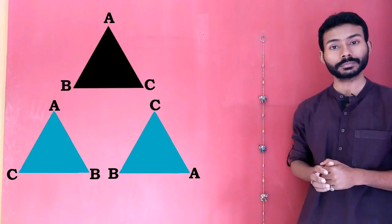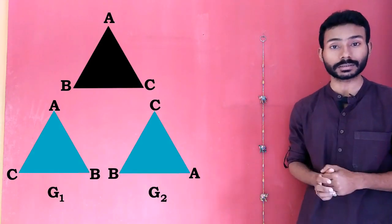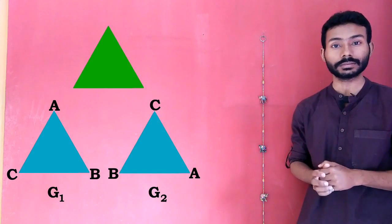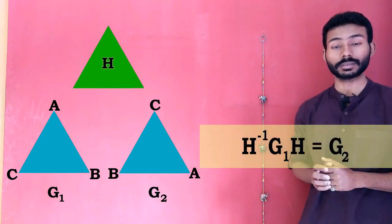And by Sylow's second theorem, both these triangles, say G1 and G2, must be conjugate, which means there must exist a third triangle, say H, such that H inverse times G1H is equal to G2.